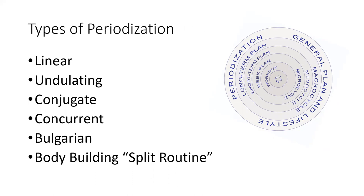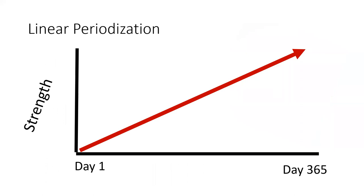There are other types of periodization too. There's linear periodization, which we'll talk a lot about today. There's undulating, which I use very frequently with more advanced athletes. There's conjugate, concurrent training styles, Bulgarian, bodybuilding split routines — a very commonly thought-of periodization method — which falls into undulating and linear in some cases.